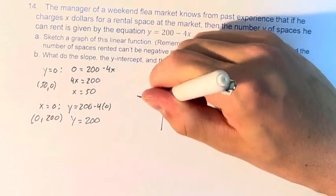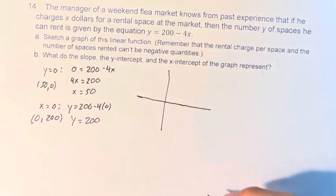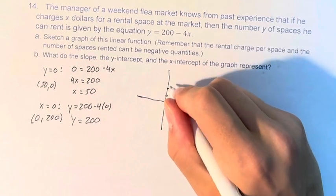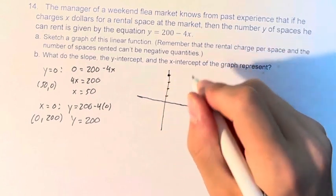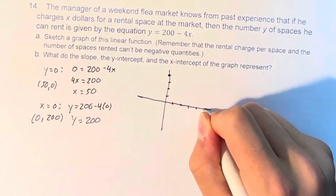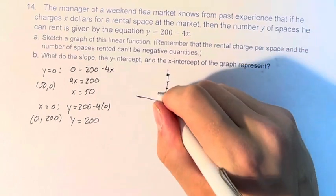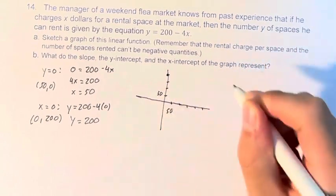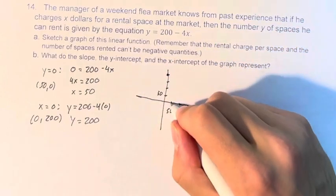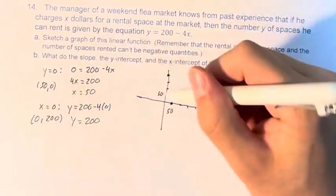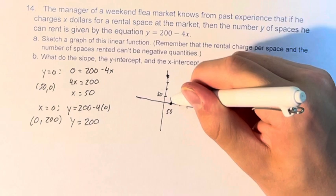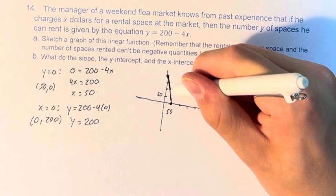So if we draw this right here, and we can do this every 50. 50, 0 is right here, and then 0, 200 is 1, 2, 3, 4 up, and therefore the graph looks like this.